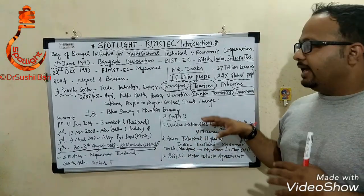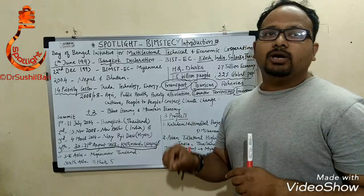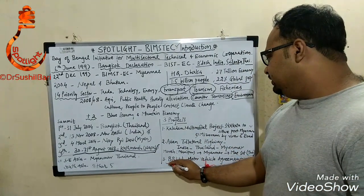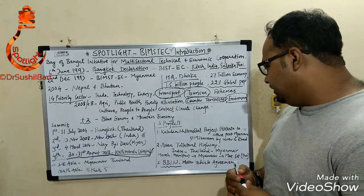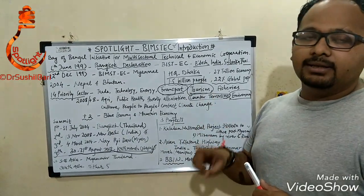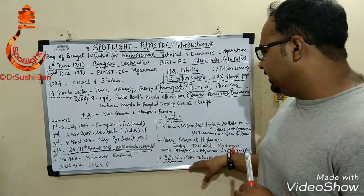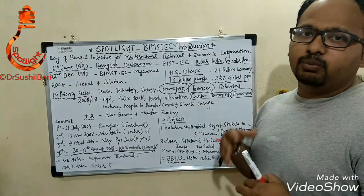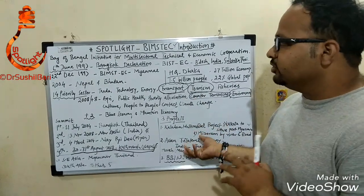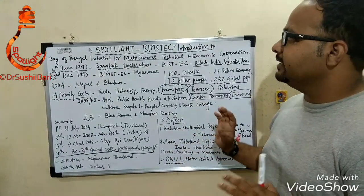In the BBIN motor vehicle agreement, Bhutan has till date not ratified the agreement. Currently only Bangladesh, India, and Nepal are going ahead with this particular agreement. In future, if Bhutan decides to join they can, otherwise Bangladesh, India, and Nepal will continue.